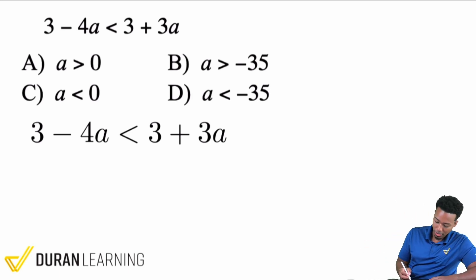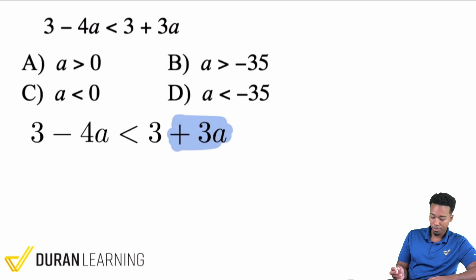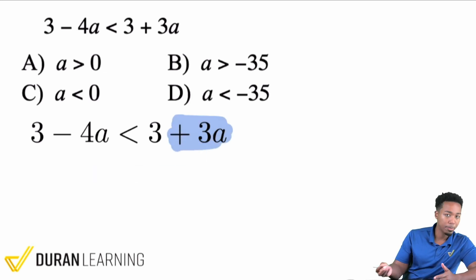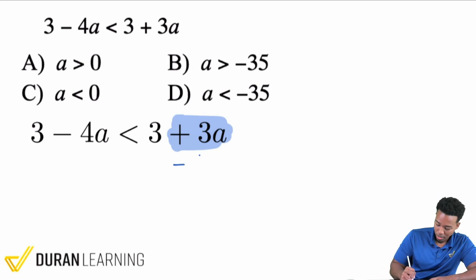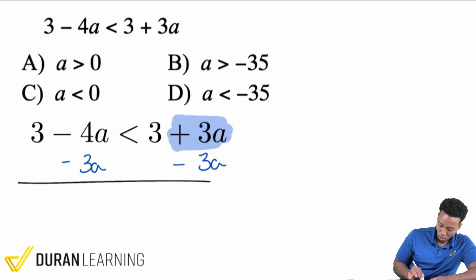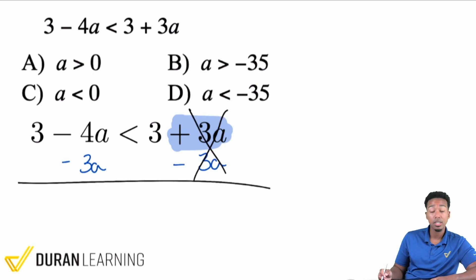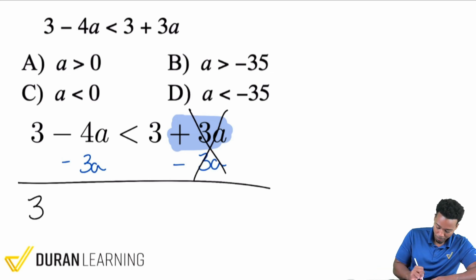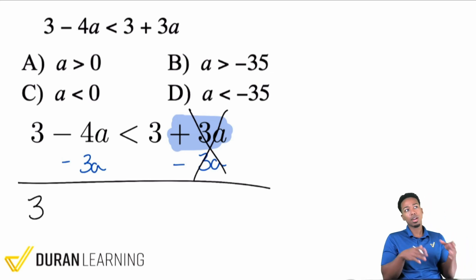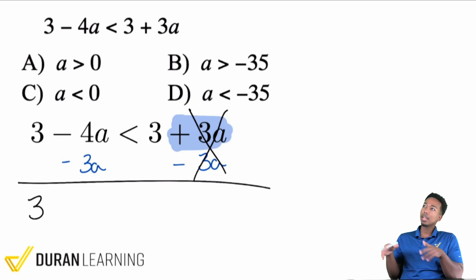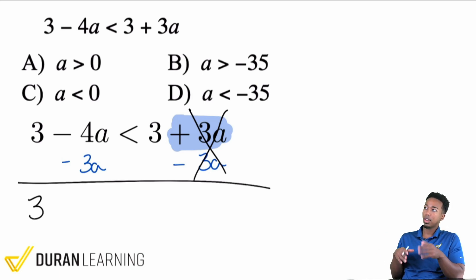So to get all that done, what I'll do is I'll take this positive 3a and I want to move it over. To move it over, opposite operations. I see a plus 3a. I'll subtract 3a on both sides. So getting rid of that, it cancels out on the right side, allowing me to have 3. And if I have a negative 4a and then I'm subtracting 3a, I'm already negative and I'm moving more negative.